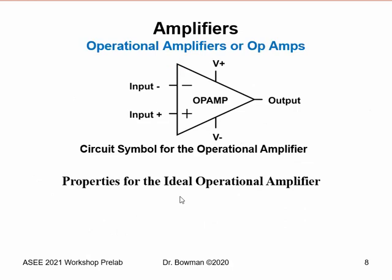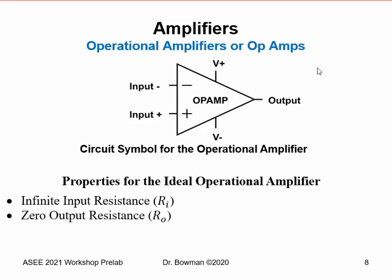Now let's look at operational amplifiers, or op amps. This is the symbol we typically use: it includes bipolar power supply inputs V+ and V−, an output signal, and a differential input pair — the difference between the two inputs is multiplied by the amplifier gain to give the output. Ideal op amp properties, which can often be closely approximated, include: infinite input resistance, zero output resistance, zero common mode gain — meaning equal in-phase signals on both inputs produce no output — since the amplifier amplifies only the difference between the two signals.